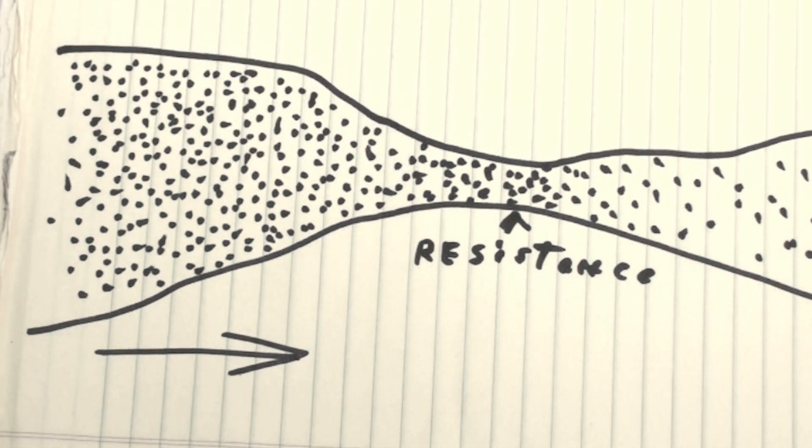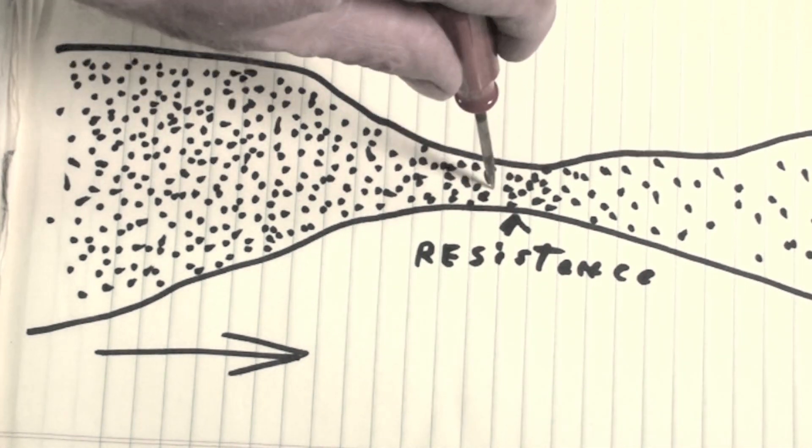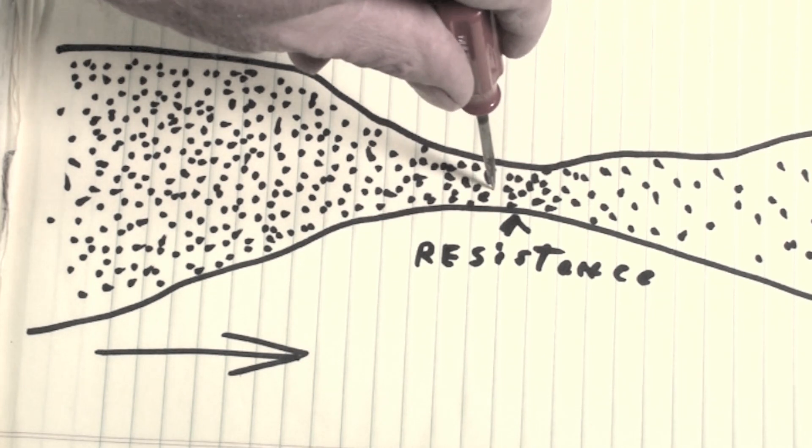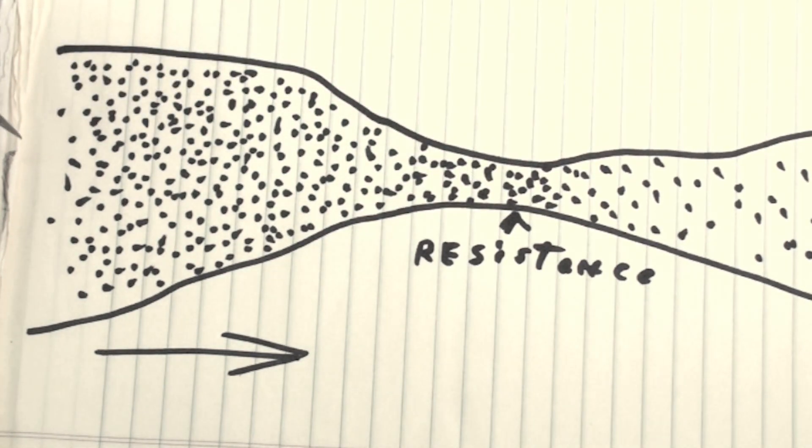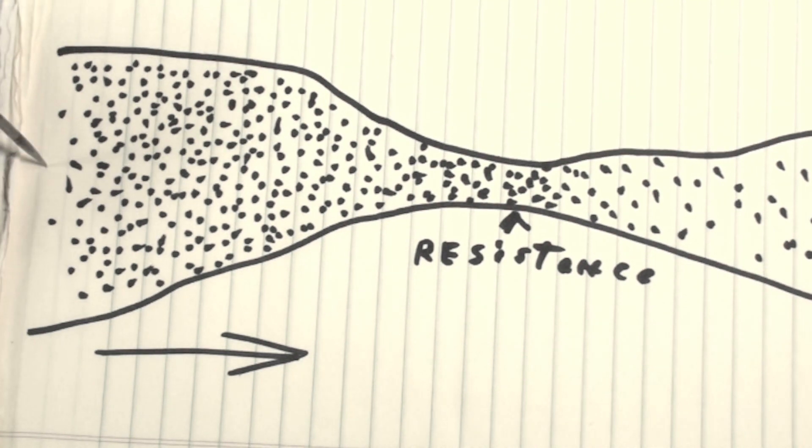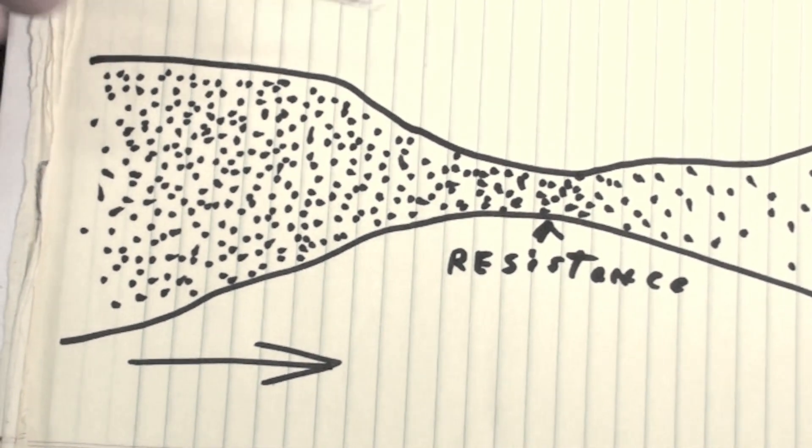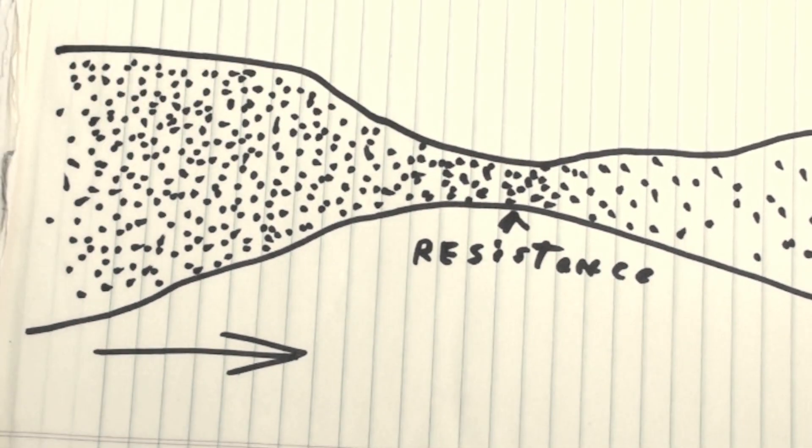So all these can't go through there in a given time. It takes a while to get them all through there. This doesn't change speed, but the number of them that get through changes. Now if I have more powerful runners here, then more would push through.